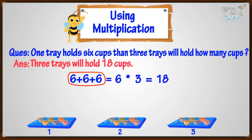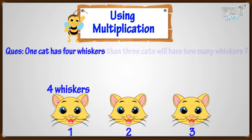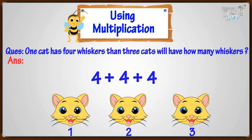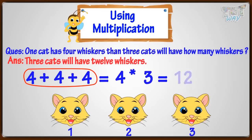Let's move on to another question. One cat has four whiskers. Then, three cats will have how many whiskers? We need to add the number of whiskers here. So, it's a problem of repeated addition. Four plus four plus four. And repeated addition problems can be written as a multiplication sentence. So, we can write it as four multiplied with three, and four times three equals twelve. So, three cats will have twelve whiskers.